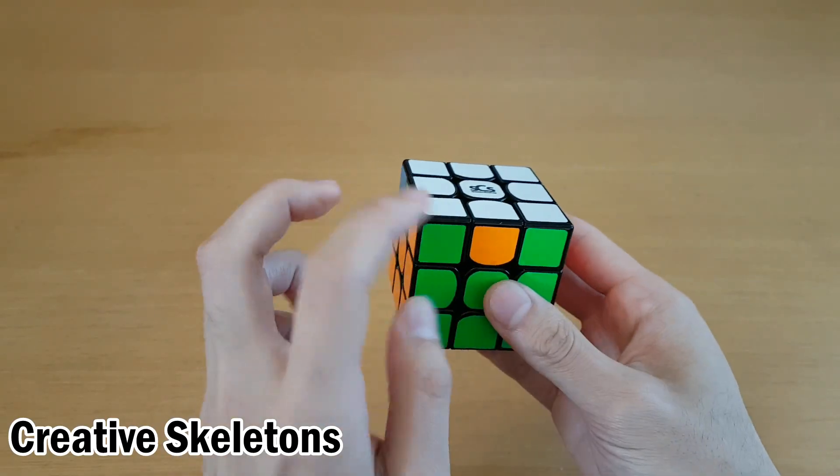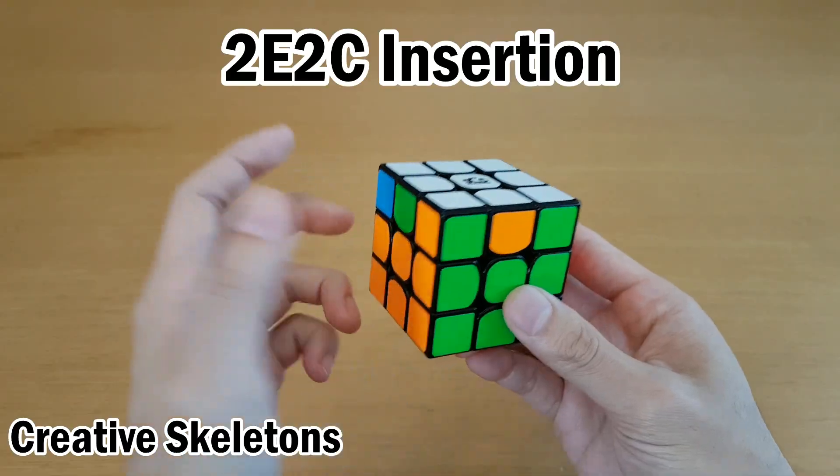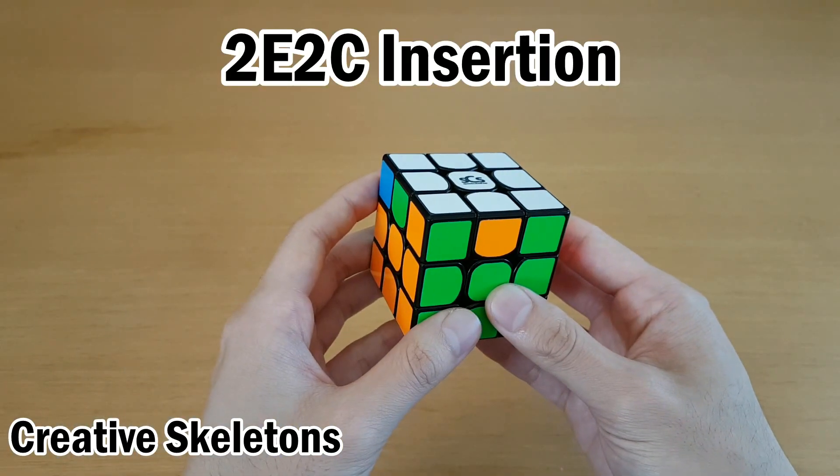Or you can solve the blocks here, and notice we have two edges unsolved and two corners unsolved. And you can instead solve this R-perm using a J-perm insertion somewhere in the skeleton.